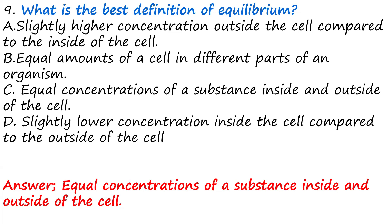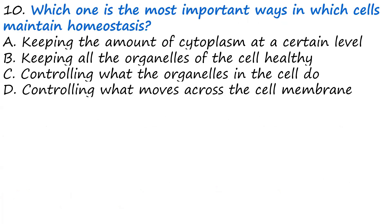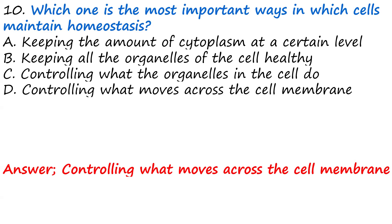Question ten: Which is the most important way in which cells maintain homeostasis? A, keep the amount of cytoplasm at a certain level. B, keep all organelles healthy. C, controlling what the organelles do. D, controlling what moves across the cell membrane. The answer is D — by controlling what moves across the cell membrane.